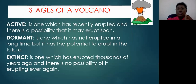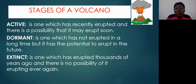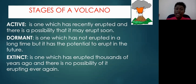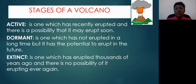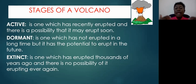Volcanoes can either be active, dormant, or extinct. An active volcano is one that has erupted recently and has the possibility of erupting again. A dormant volcano is one that has not erupted in a very long time, but still has the potential to erupt in the future. An extinct volcano is one that volcanologists believe will never erupt again — the magma chamber is empty because the supply of magma has been cut off.